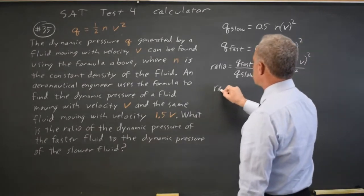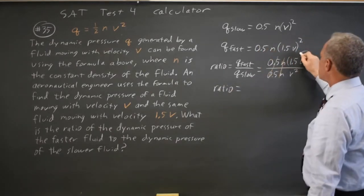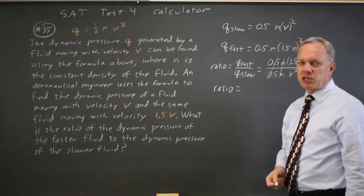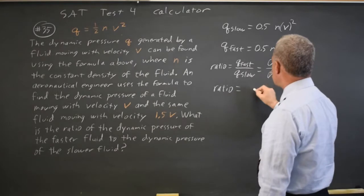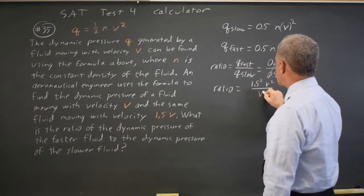So my ratio is equal to, I can distribute the exponent to each factor inside the parentheses. I can't do that with terms in a binomial, but these are factors. So it's 1.5 squared V squared over V squared.